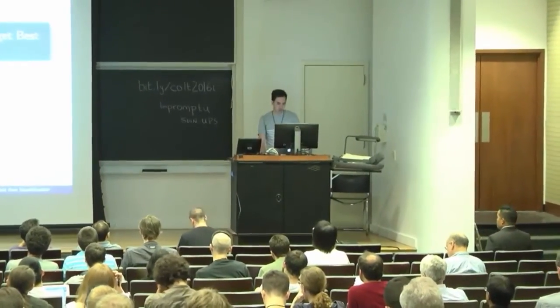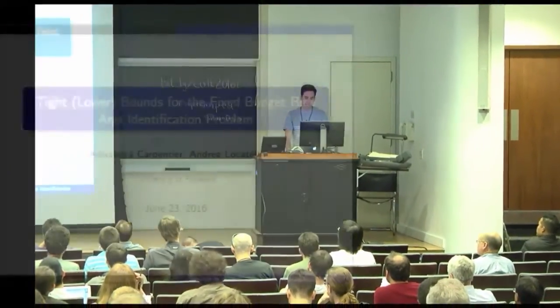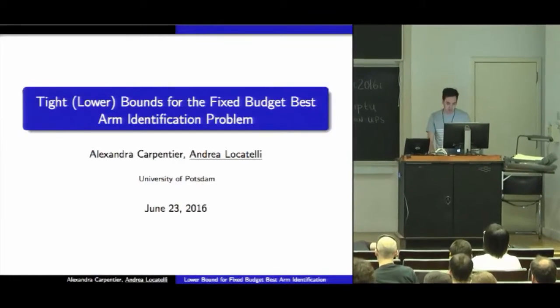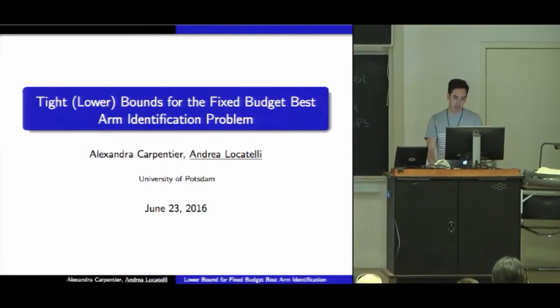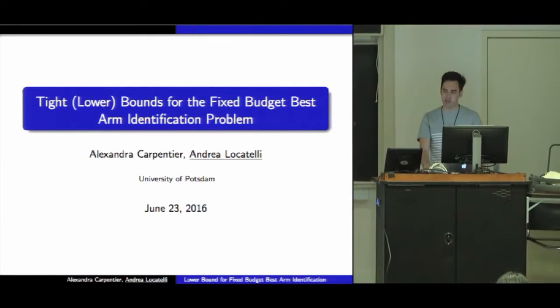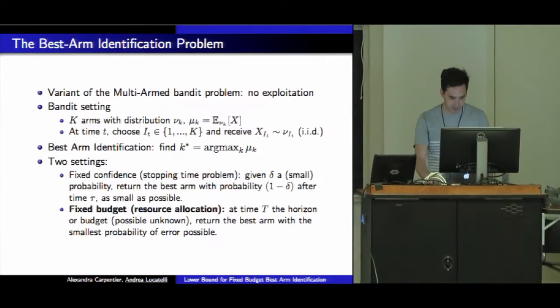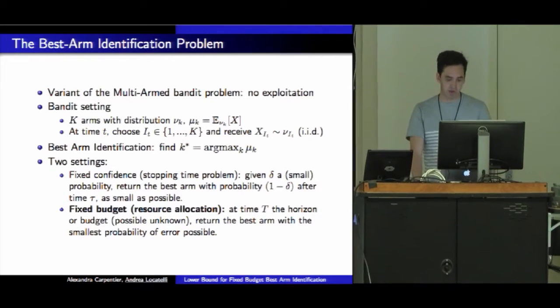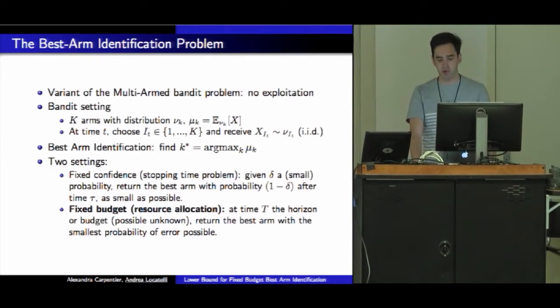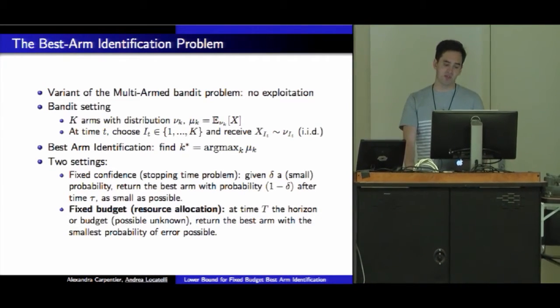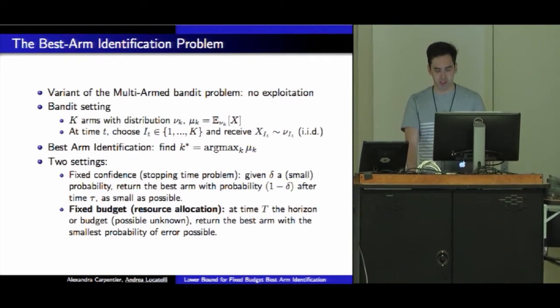Thanks for the introduction. I'm going to be talking about best arm identification, but this time in the fixed budget setting, and I'm going to present a new tight lower bound for that. This is joint work with my advisor Alexandra Carpentier. As we have already seen, this is a variant of the multi-armed bandit problem where we don't care about exploitation but simply want to make a recommendation at the end of the game.